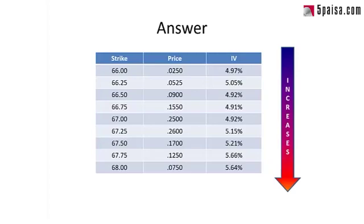Think about why this is the case. Normally, when USD strengthens against INR, it's fear-inducing — this happens during geopolitical uncertainty, rising crude prices, or risk-off environments where people seek the safety of the USD. So USD strengthening is a sign of bad things to come, making it the direction of fear, and because of that the skew is reversed in USD-INR.